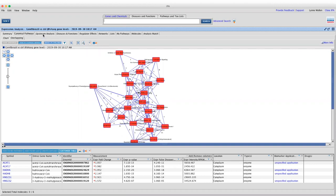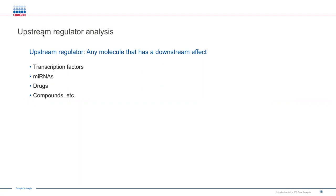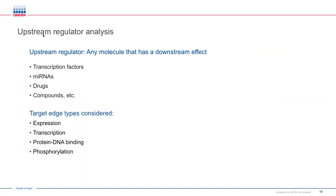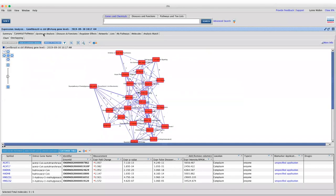Now I'd like to move on to the upstream analysis, where we can ask: are there upstream regulators responsible for the patterns I see in my data set? IPA considers any molecule that has a downstream effect to be an upstream regulator — not just transcription factors, but also microRNAs, drugs, and much more. IPA looks for interactions that affect expression, transcription, a protein's ability to bind DNA, and phosphorylation.